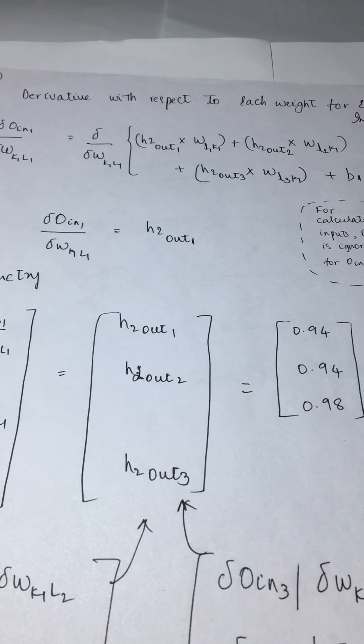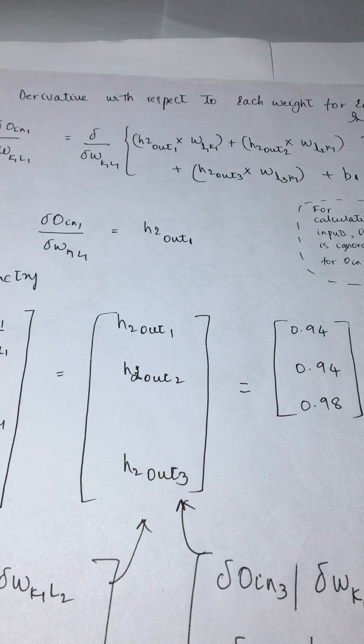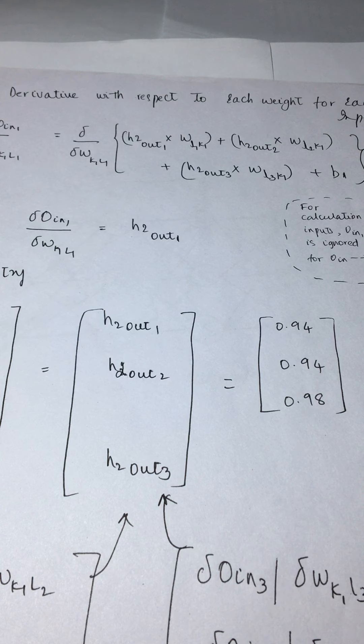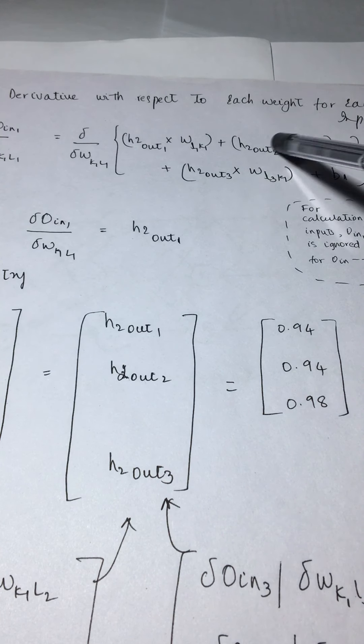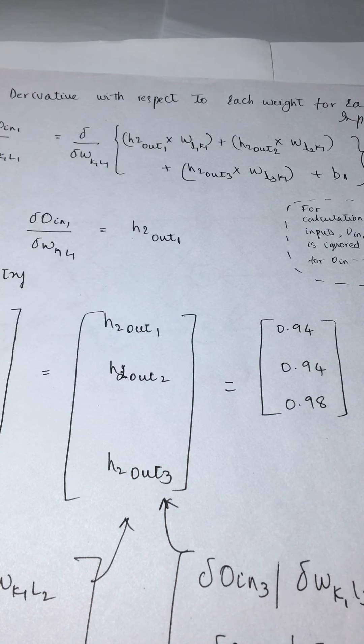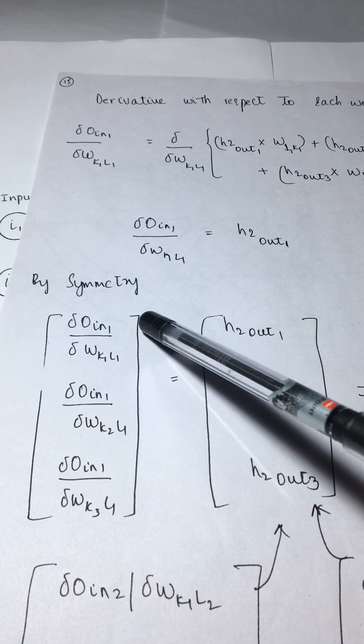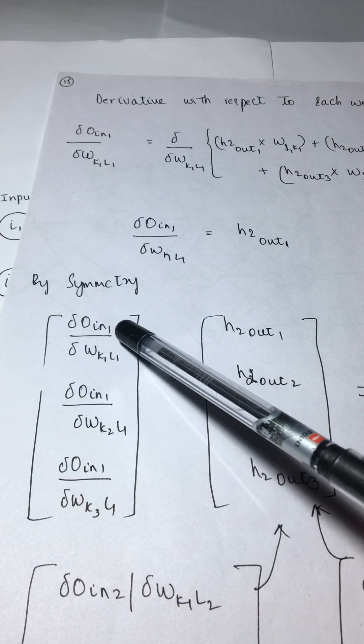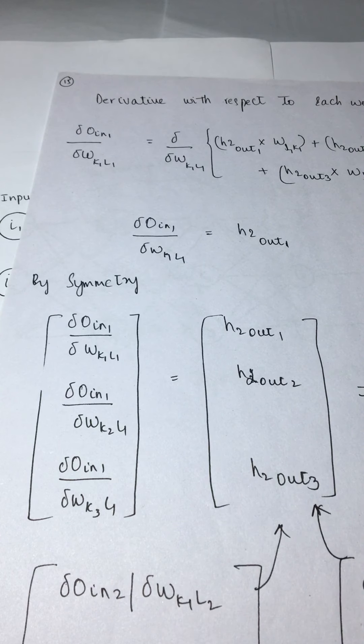When you calculate derivatives for each of these, for weights K1L1, the first term output would be H2 output 1, and the remaining two would be zero since they're constants. By symmetry, delta O in 1 by delta K1L1, O in 1 K2L2, O in 1 K3L3 is H2 output as well.